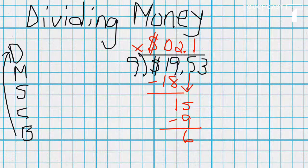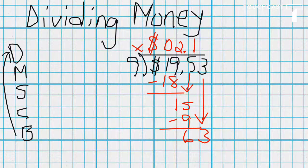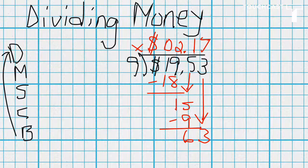Then we compare, six is less than the nine, our divisor, so we can bring down. And now we divide nine into sixty-three, which goes seven times. Seven times nine is sixty-three. And then we subtract. And there's nothing else to bring down, so the answer is two dollars and seventeen cents.